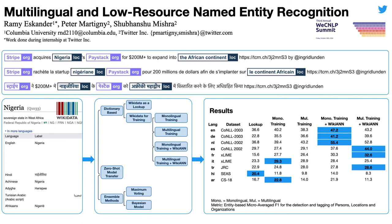Hello and welcome to this quick summary of our poster on multilingual and low-resource named entity recognition at the third annual WS Signal Peace Summit. We are Peter Martini and Chubancho Mishra from Twitter, and Rami Iskandar from Columbia University.